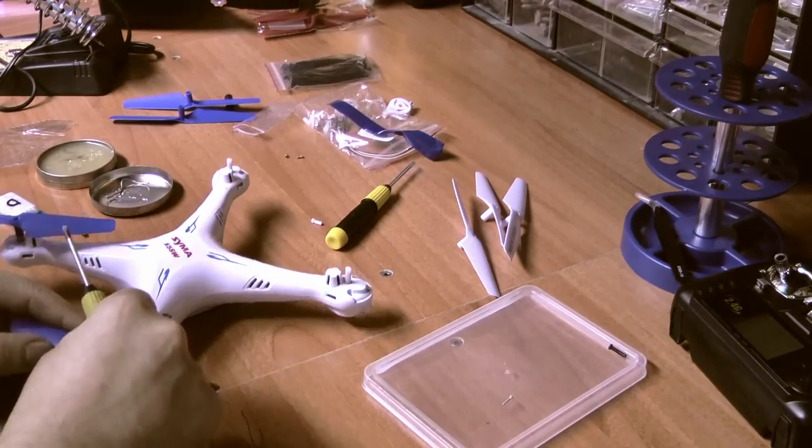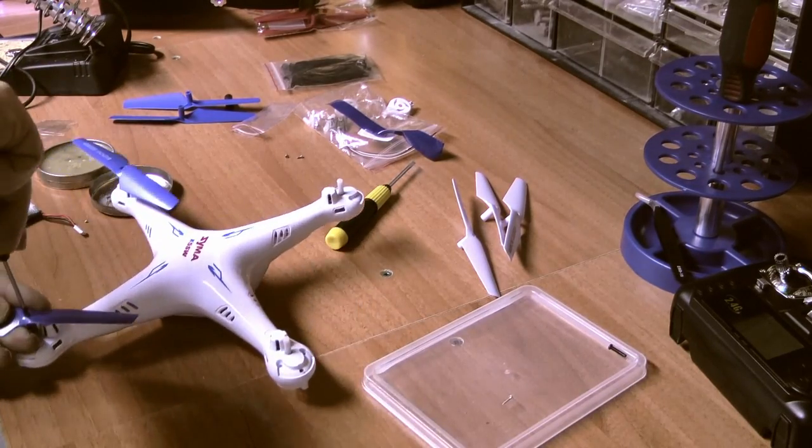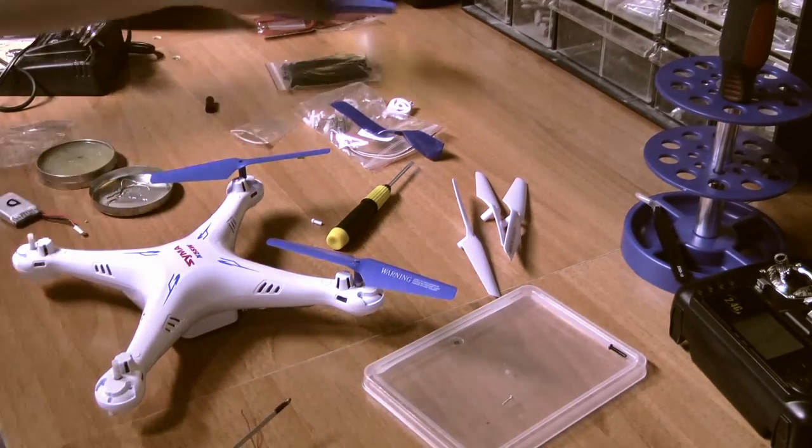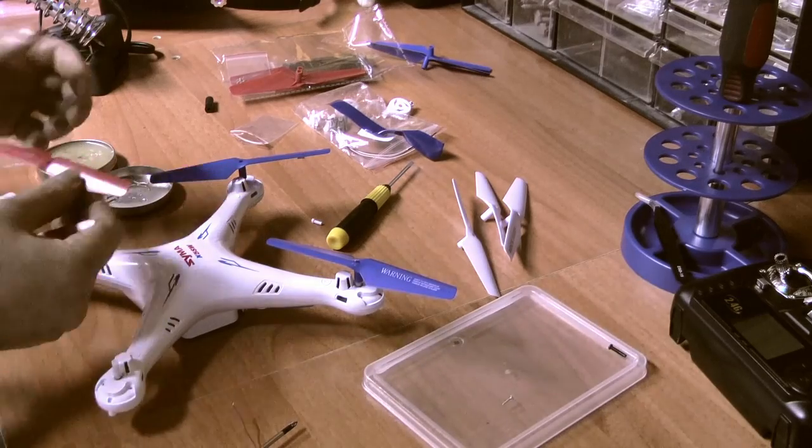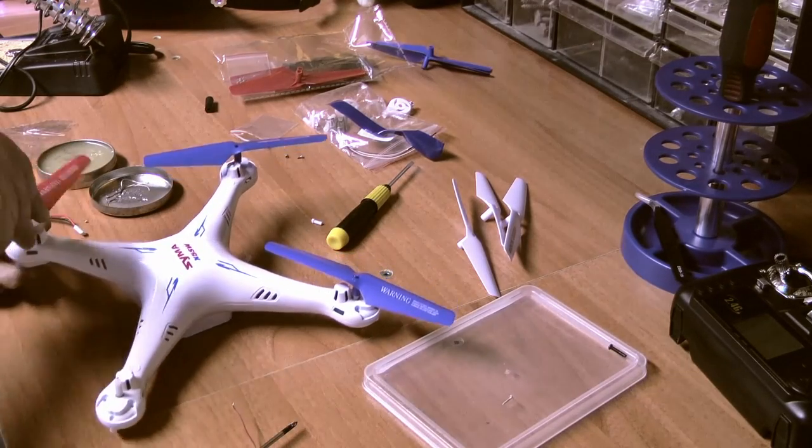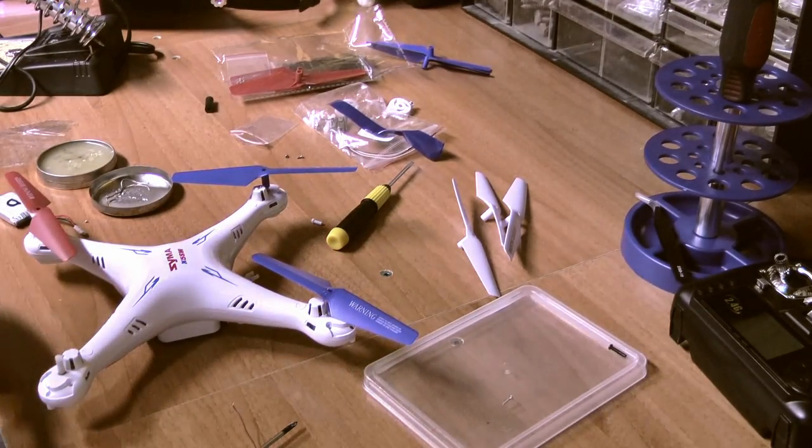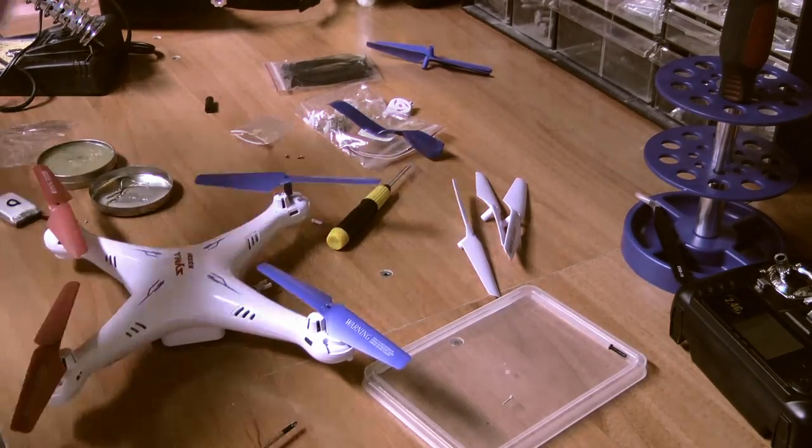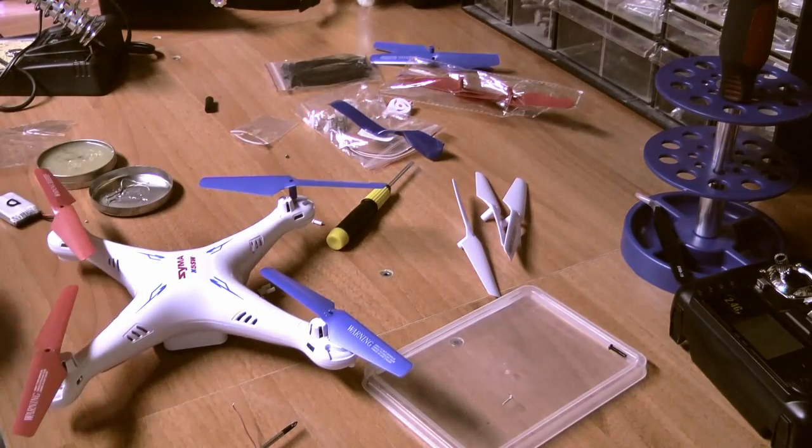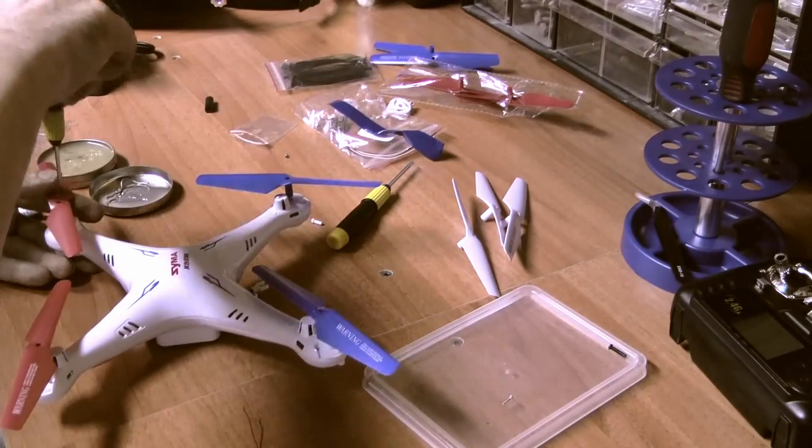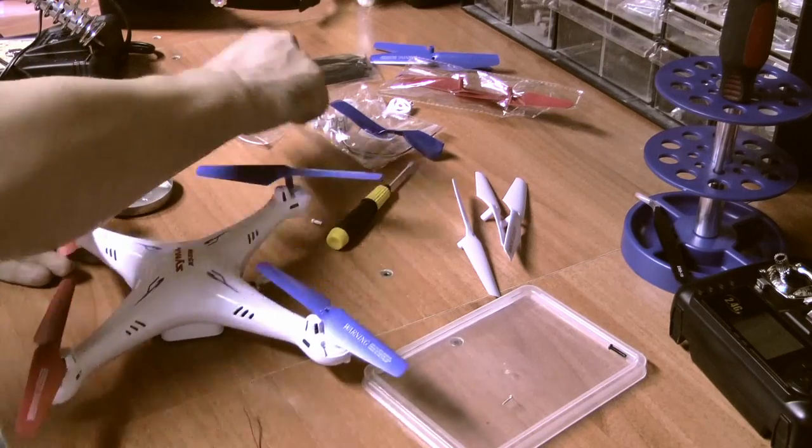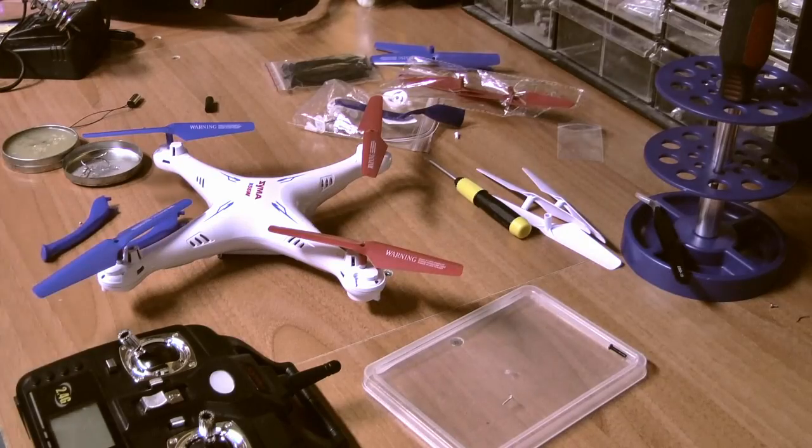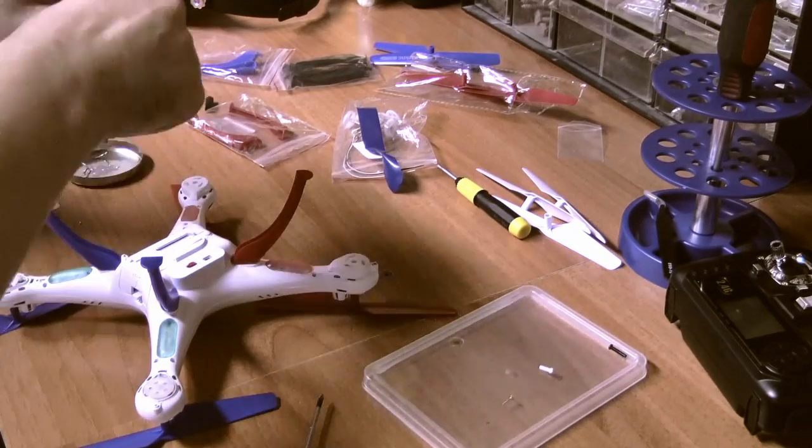Because all motor bumpers were destroyed by my daughter, I need to put new ones on. It wouldn't be wise to land this thing on its belly without motor bumpers. The guards will also be different colors so you can easily see the direction the quad is flying - blue at the back and red in the front.